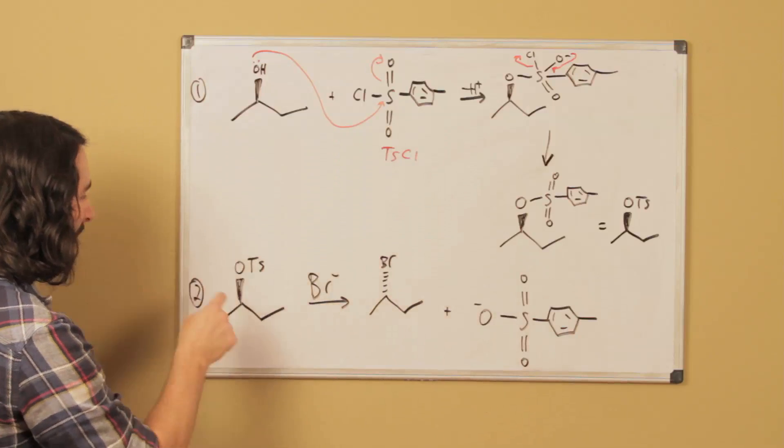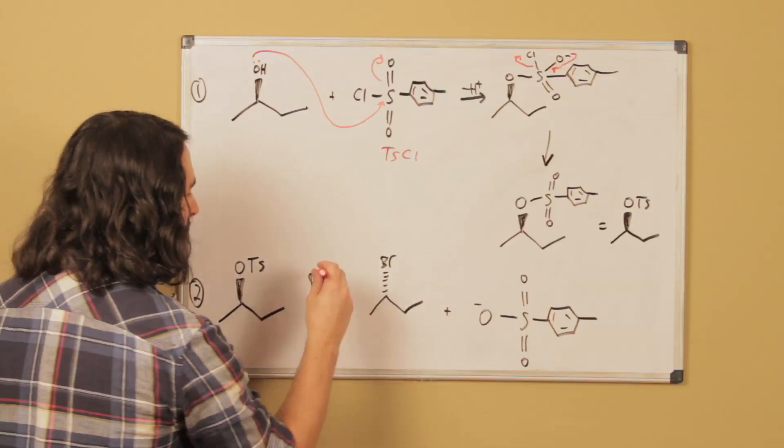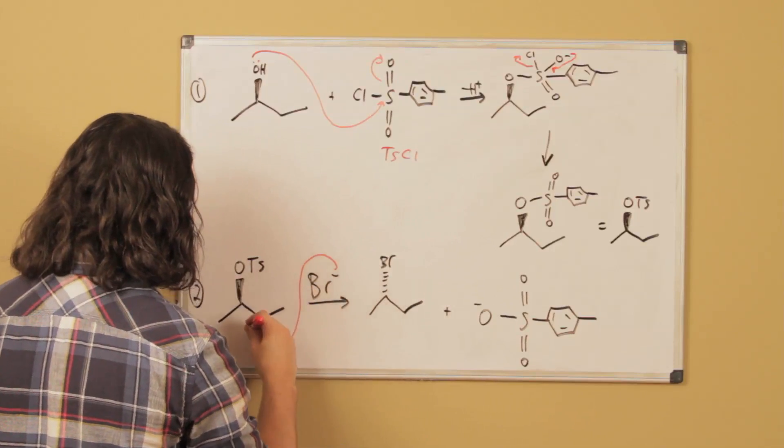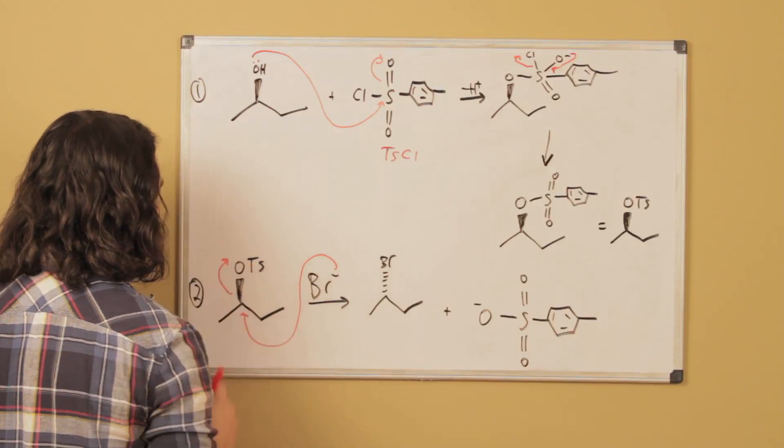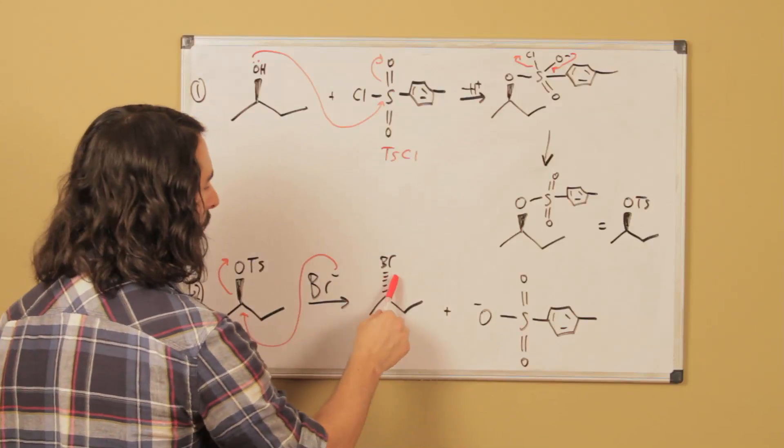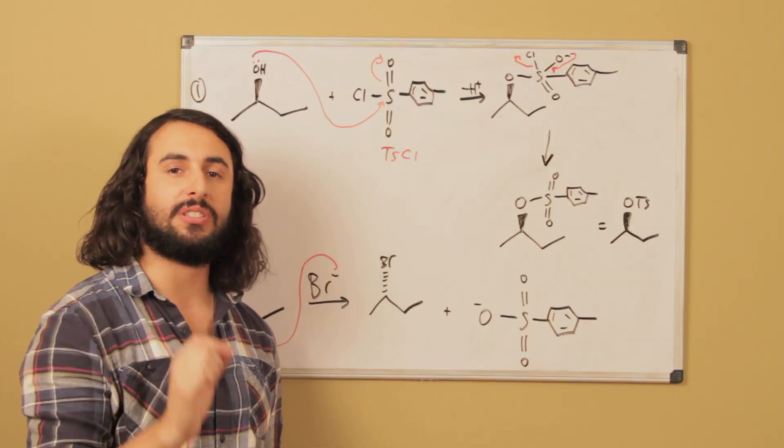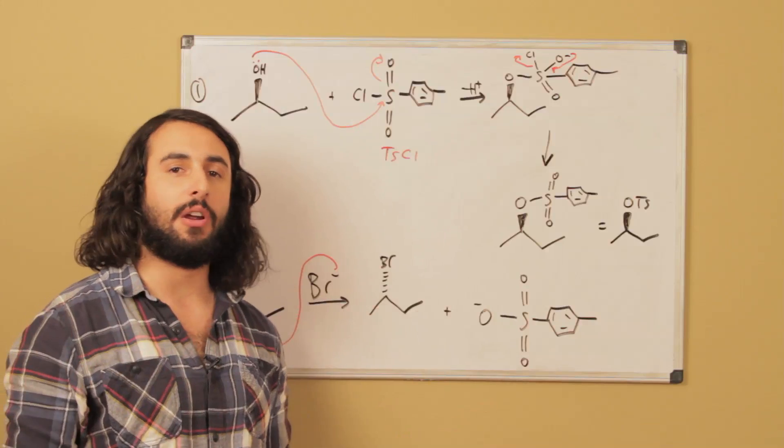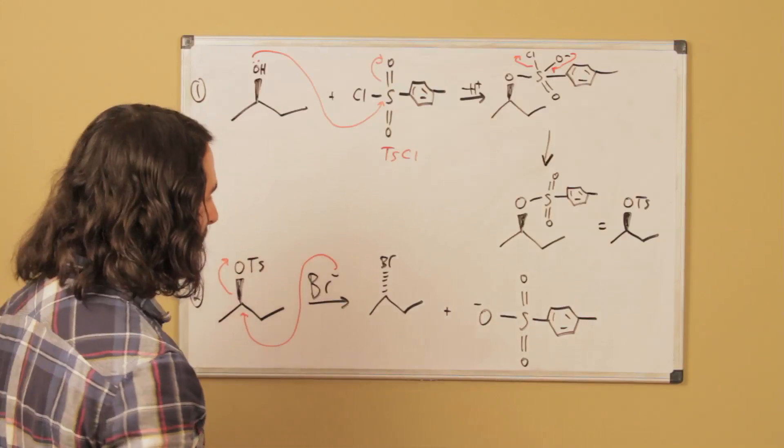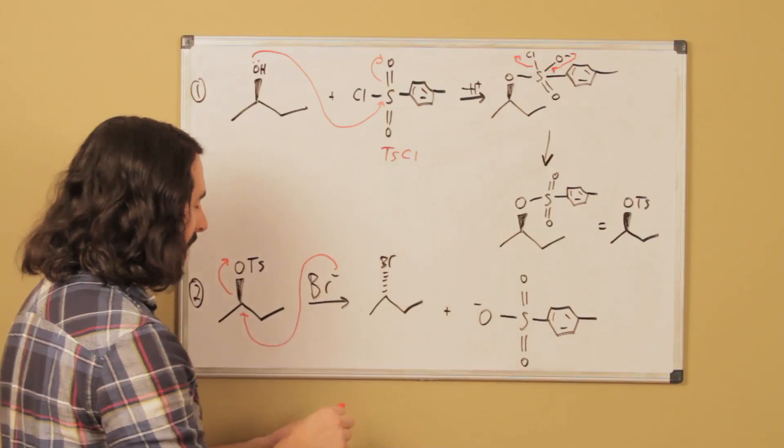If we have O-tosyl, bromide is actually going to have no problem doing an SN2 reaction on O-tosyl right there. And we will get our SN2 product with inversion of stereochemistry again. SN2 is stereospecific and anything stereospecific is very useful for synthesis.